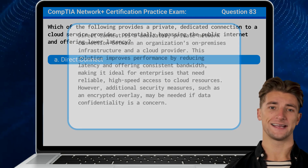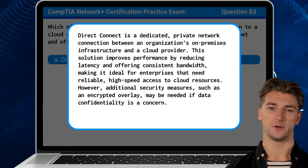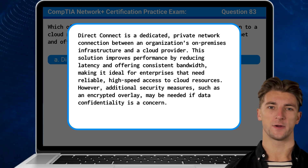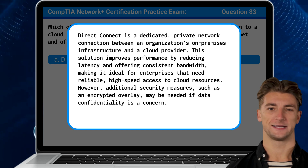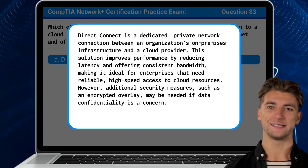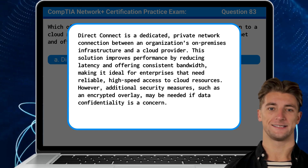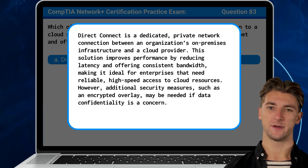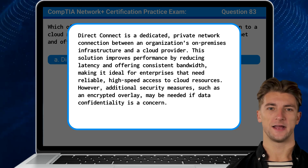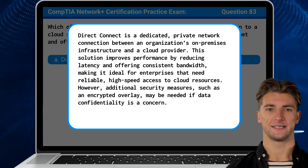Direct Connect is a dedicated private network connection between an organization's on-premises infrastructure and a cloud provider. This solution improves performance by reducing latency and offering consistent bandwidth, making it ideal for enterprises that need reliable, high-speed access to cloud resources. However, additional security measures, such as an encrypted overlay, may be needed if data confidentiality is a concern.